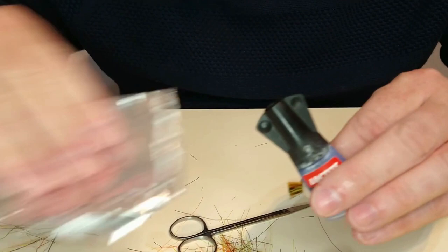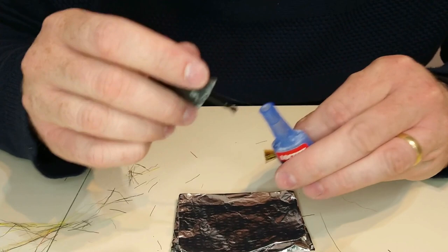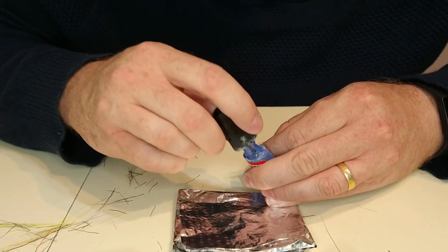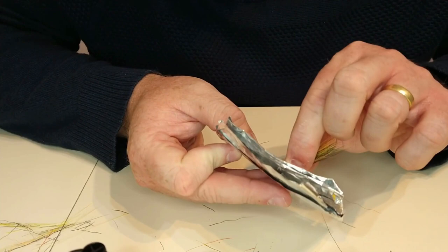Then I get my super glue and a bit of tin foil. If you put super glue on tin foil, it'll stay wet for several hours. All you need to do is put a bit of super glue on tin foil and then dab the ends, the cut ends, into the glue.